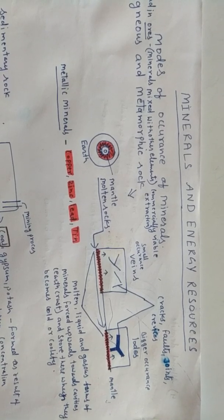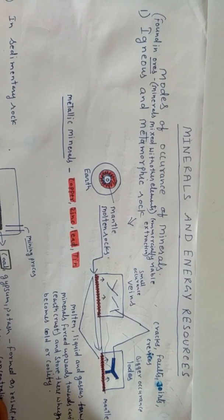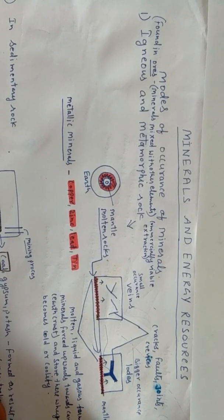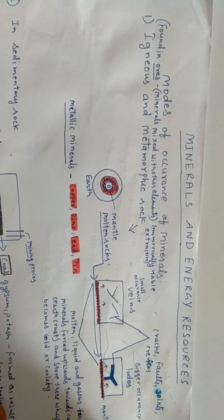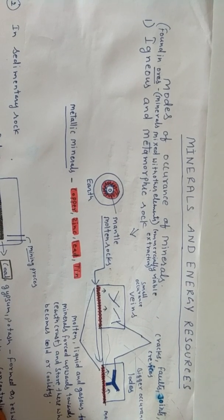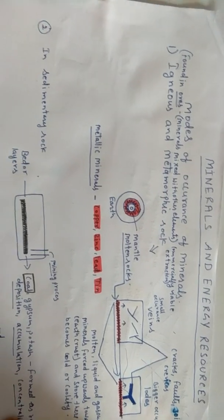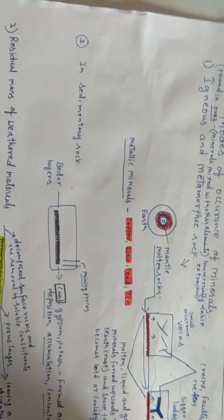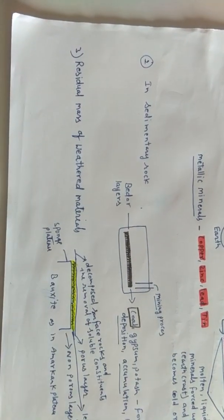The next topic is the mode of occurrence of minerals — where minerals are found, in which forms, and in which types of rocks. Minerals are found in five forms: igneous and metamorphic rocks, sedimentary rocks, residual masses of weathered material, alluvial deposits, and ocean water.